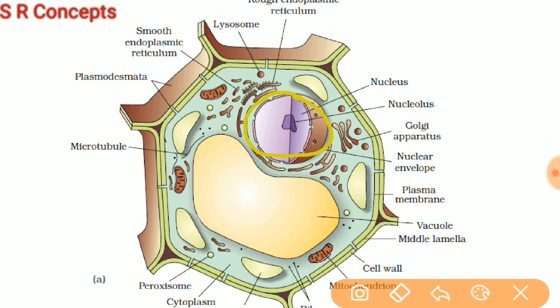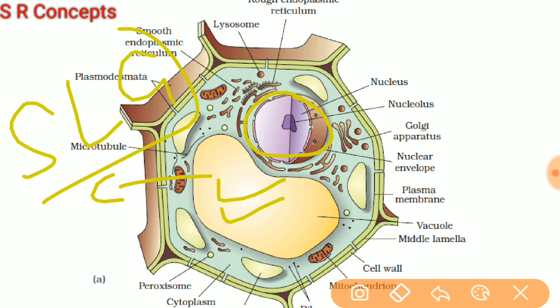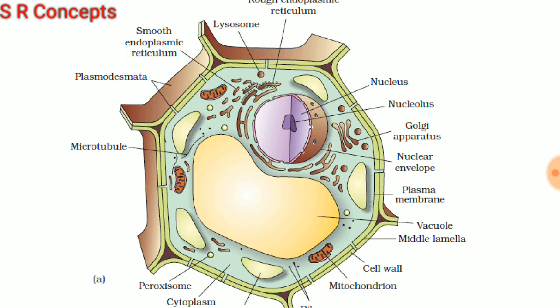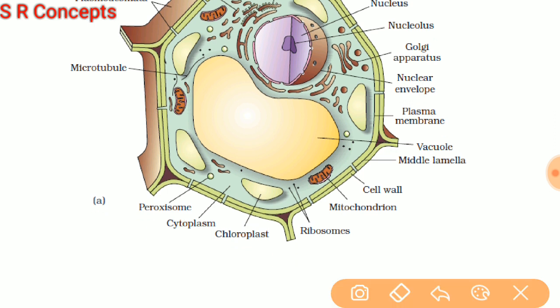This large pouch-like structure is called vacuole. The function of vacuole is to store solid, liquid, and gaseous materials inside the cell — so it is the storage house of the cell. Another important structure is lysosome. Lysosomes are small pouches or vesicles which have a liquid inside them that is a mixture of many enzymes. These enzymes bring about the digestion of different materials inside the cell — this is called intracellular digestion.